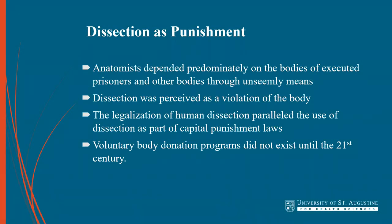From the times of ancient Egypt and Greece to the 19th century Western world, anatomists had depended on the bodies of executed people, bodies acquired through grave robbing, unclaimed deceased in poor houses and hospitals, murder victims, and suicides as their main sources of research. As the study of human anatomy became a more legitimate and prevalent science during the Renaissance, the demand grew for legalization of dissection and, perhaps more importantly, a legal source of human bodies. Bodies of the executed became the legal primary source for anatomical dissection.